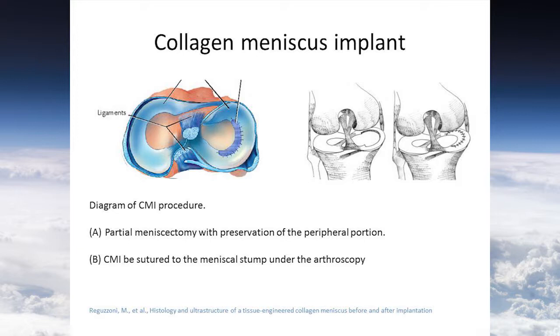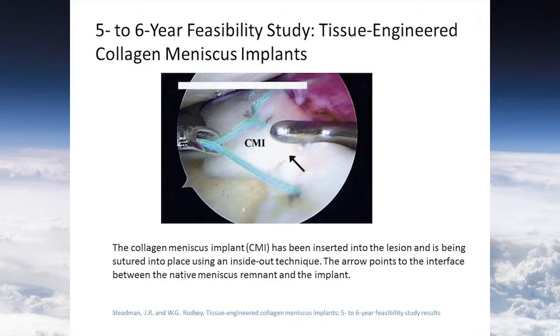This is the procedure for the CMI. It is used for partial meniscectomy with preservation of the peripheral portions, so that these implants can be sutured to the meniscus stumps under arthroscopy. In the five-year feasibility study, the CMI is inserted into the lesion and sutured in place using an inside-out technique. The arrows point to the interface between the native meniscus remnant and this implant.